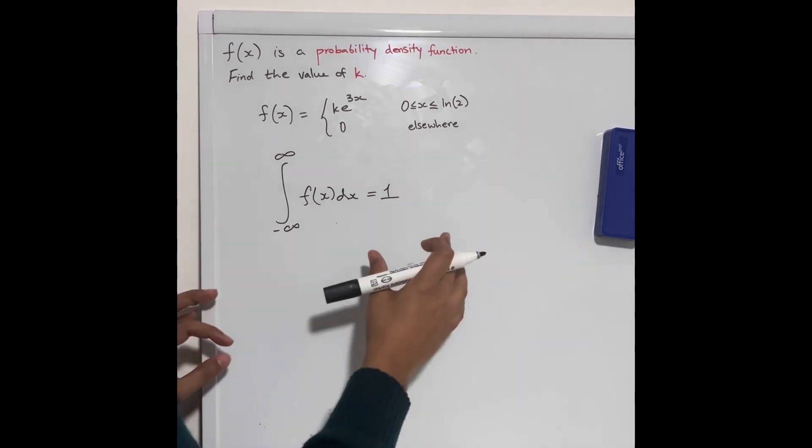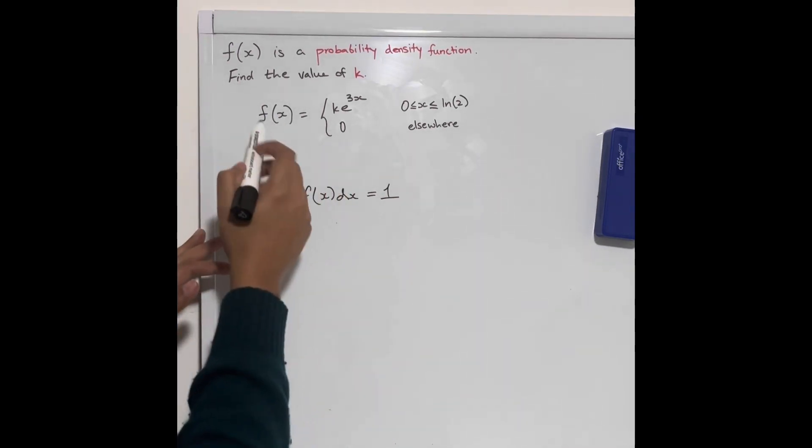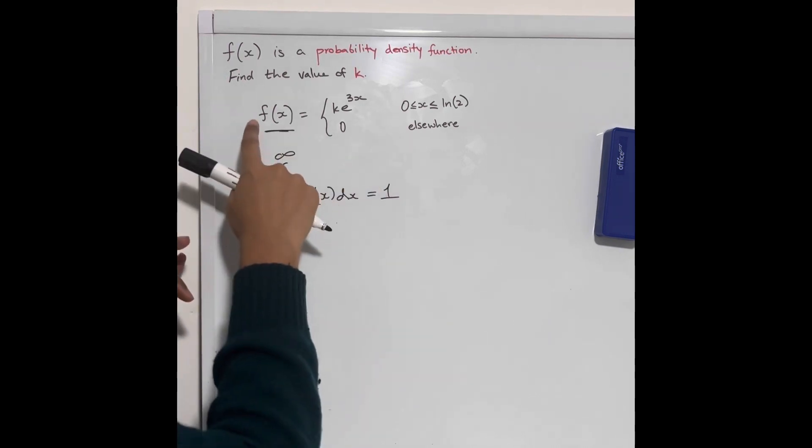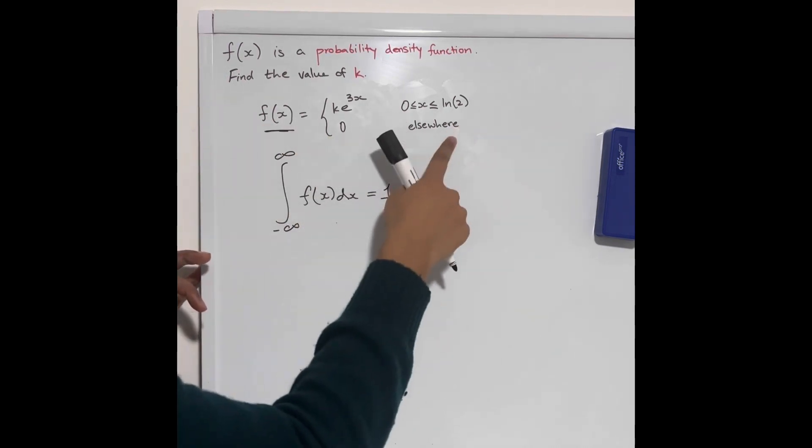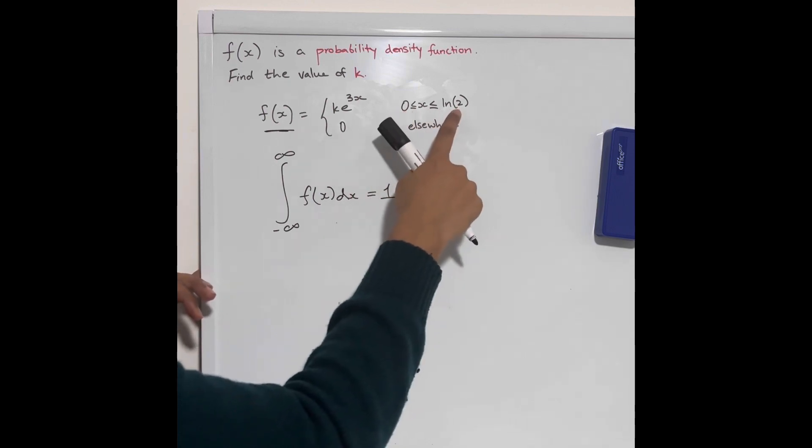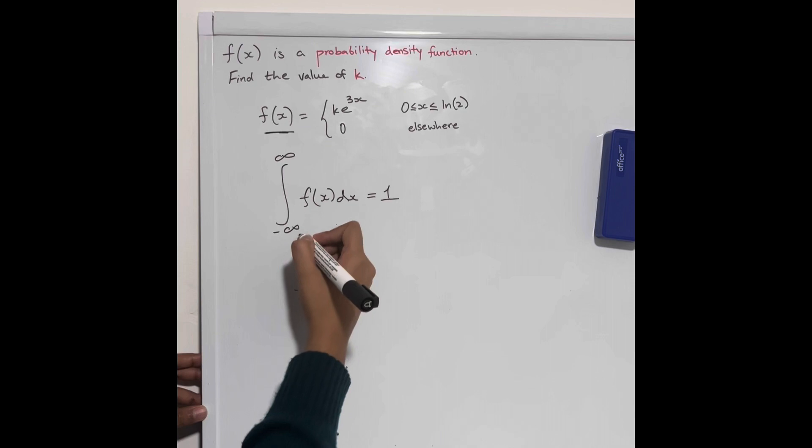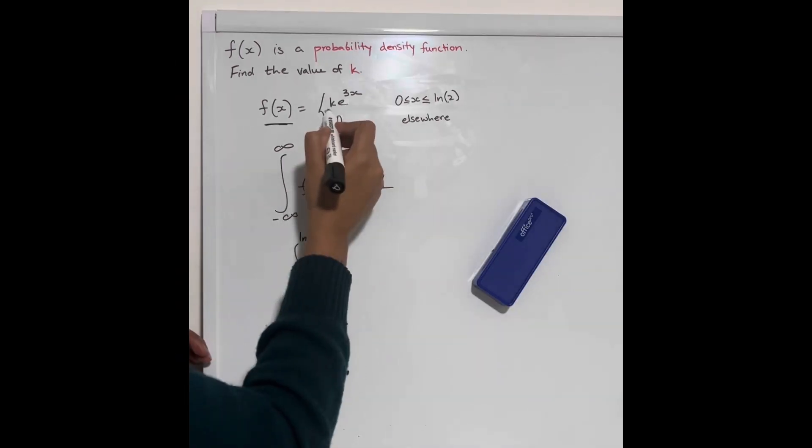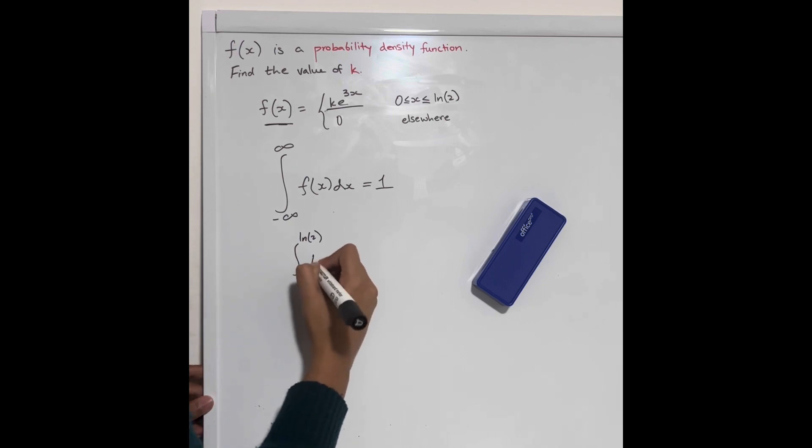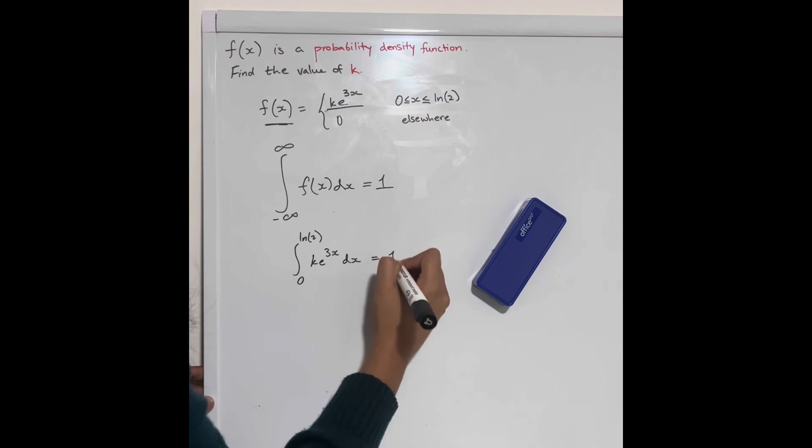So given this, we know that when we integrate this f of x, because f of x is 0 everywhere except between 0 and ln 2, this integral can be simplified to be between 0 and ln 2 for ke to the 3x, and that will equal 1.